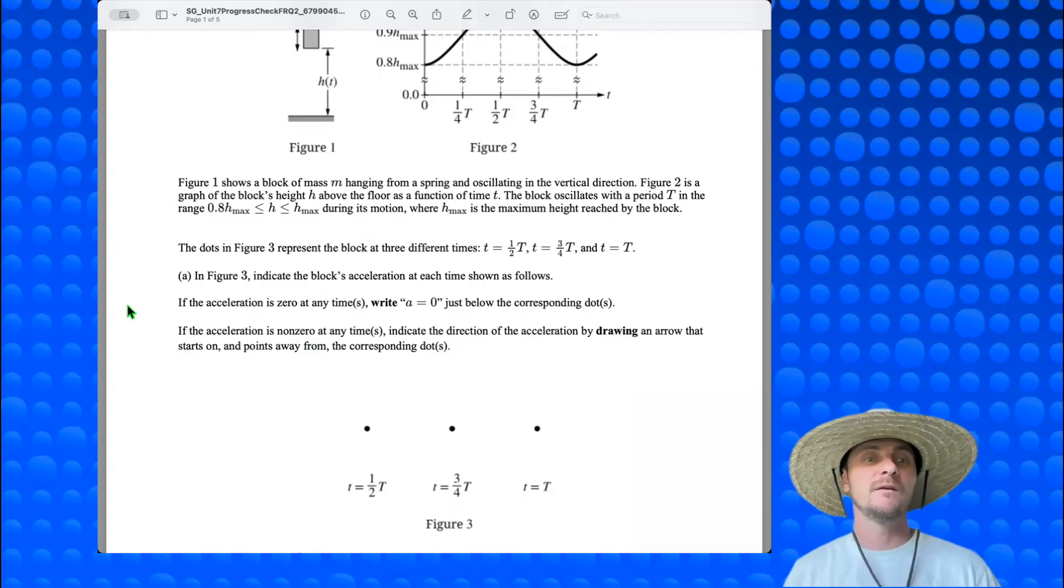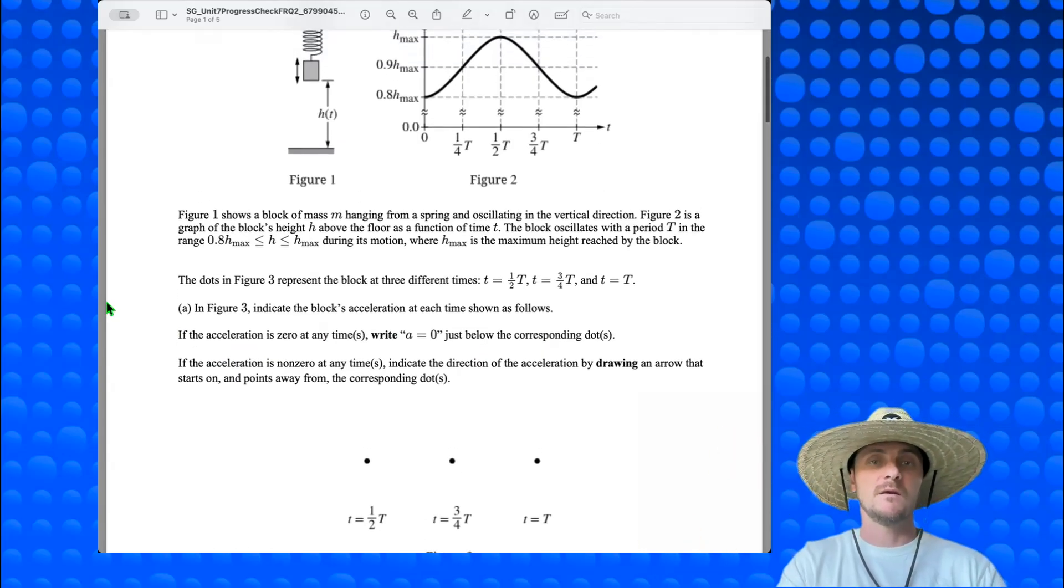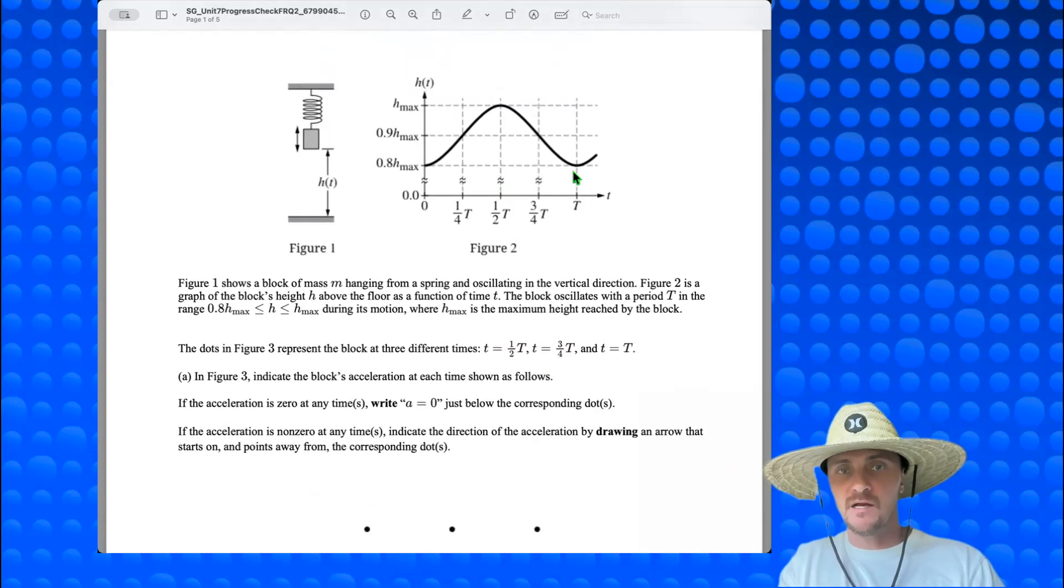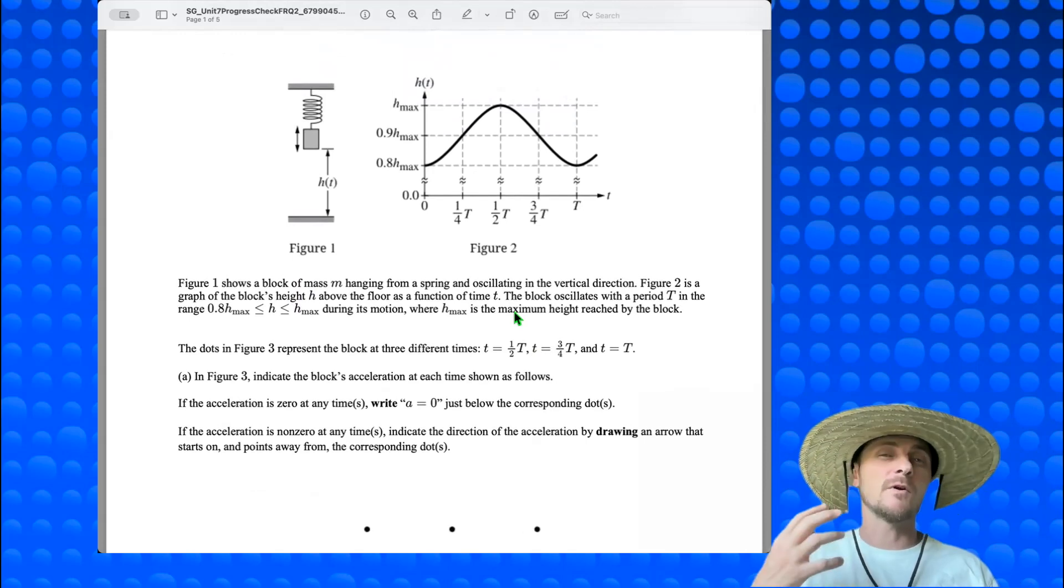Part A. In Figure 3, indicate the block's acceleration at each time shown as follows. If the acceleration is zero at any time or times, write a equals zero just below the corresponding dot. If the acceleration is non-zero at any time or times, indicate the direction of the acceleration by drawing an arrow that starts on and points away from the corresponding dot, and it can either be up or down is what they're referring to. Okay, now we're dealing with these three different times, which puts me at h max, 0.9 h max, and 0.8 h max. I need to remember something about simple harmonic motion.